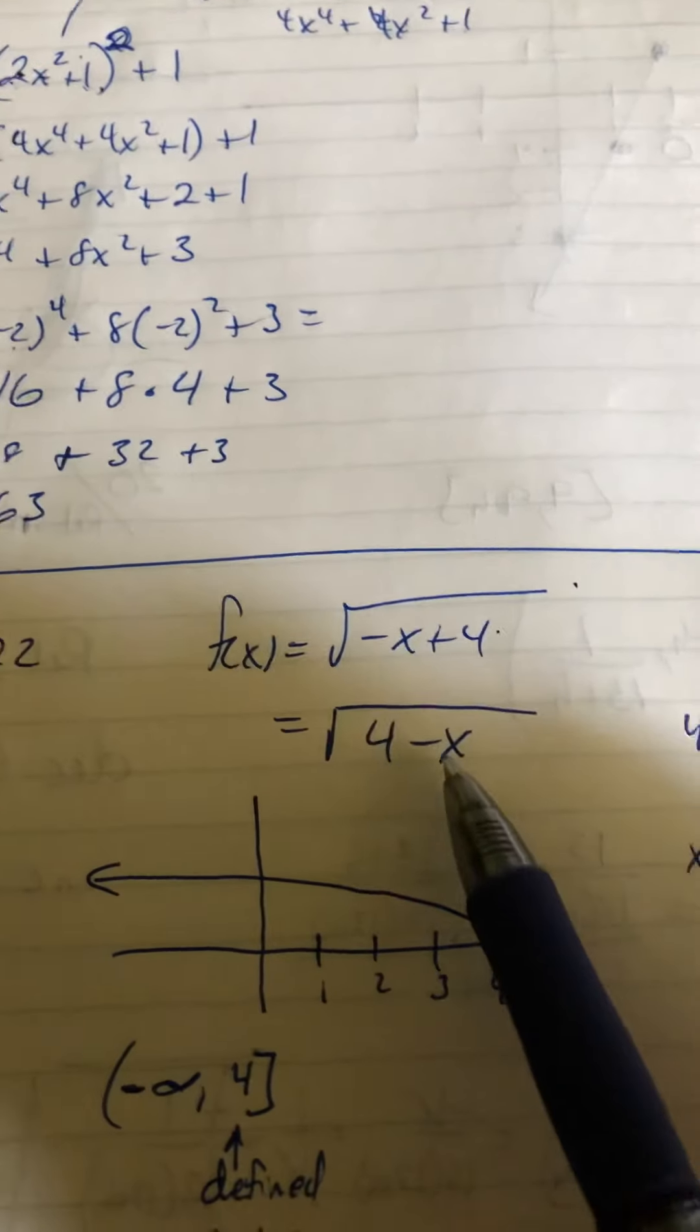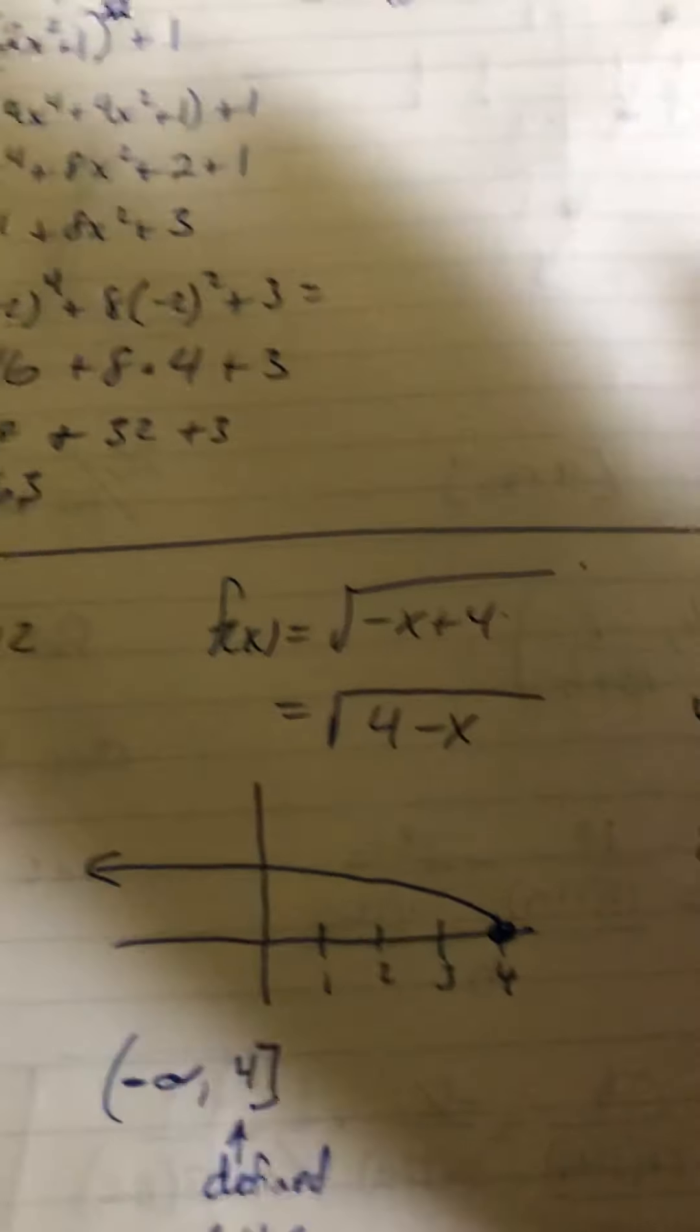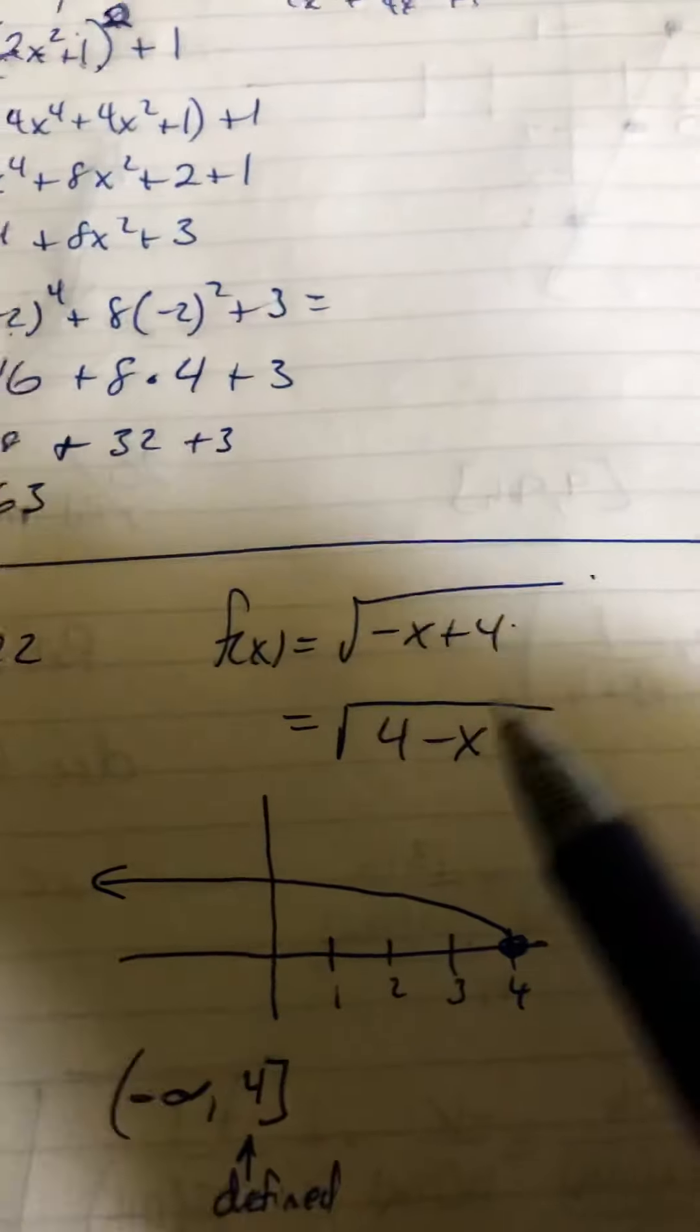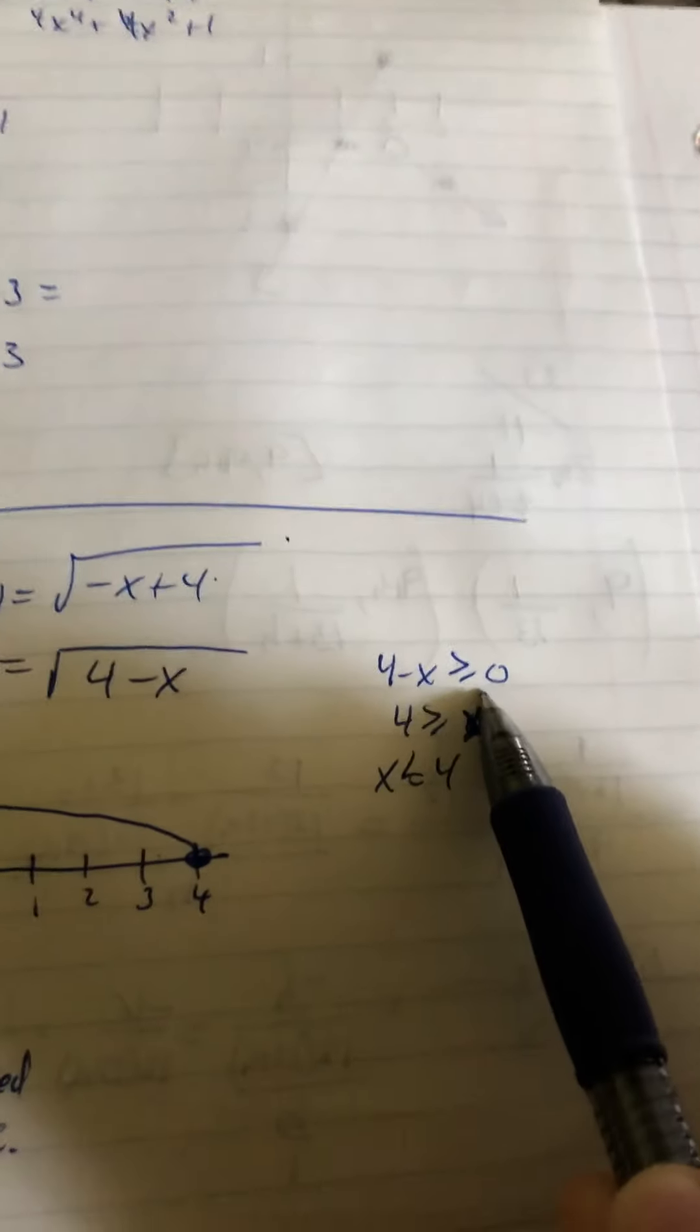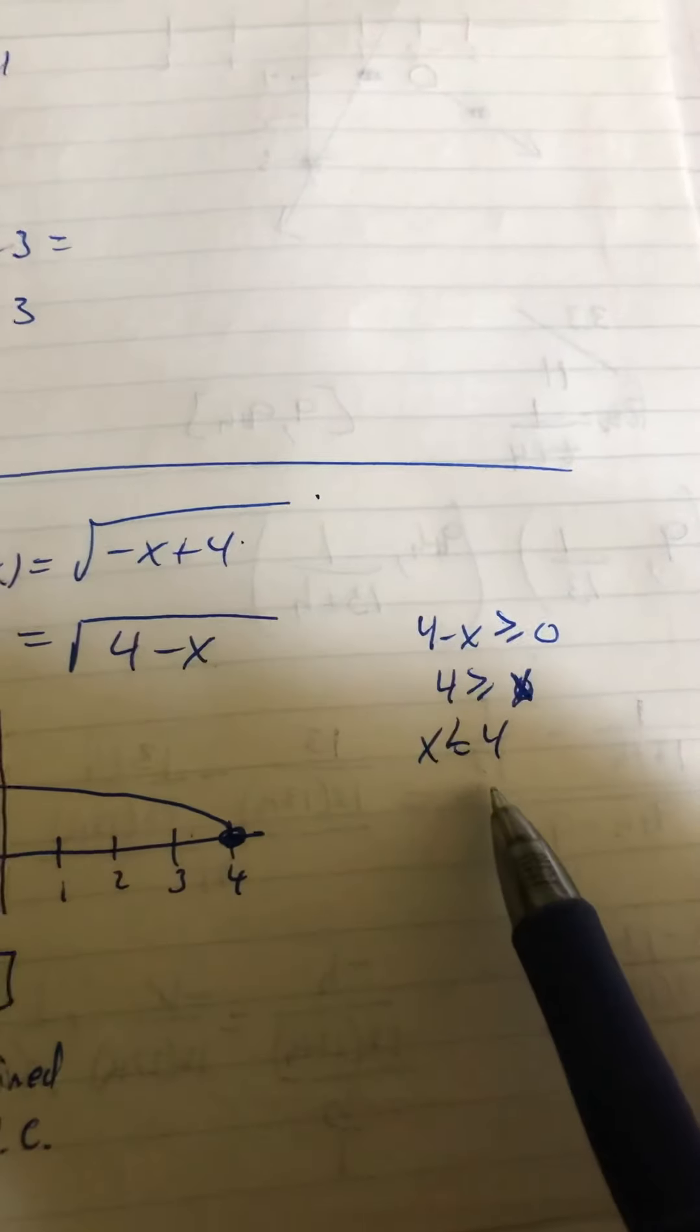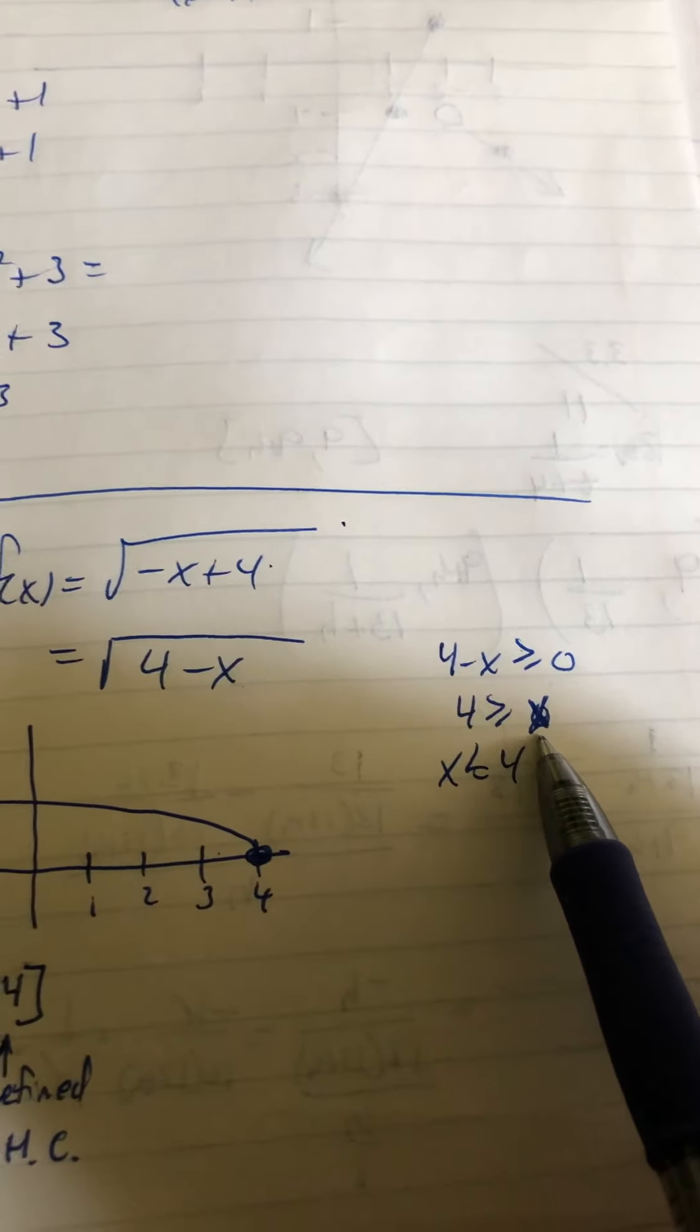I flip this around inside of here to see what it looks like a little bit more logically in my head. I read it as 4 minus x. Well, I want 4 minus x to be greater than or equal to 0. So I took the x to the other side. It became positive.